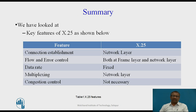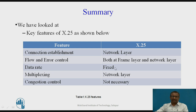In summary, we have made a table of features of X.25. Different features and at which layer each task is done are shown. Connection establishment is done at the network layer. Flow and error control is done at both the frame layer and network layer. Data rate in X.25 is fixed. Multiplexing is done at the network layer, and congestion control is not necessary because the line is of fixed capacity, so there is no possibility of congestion.